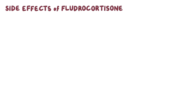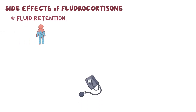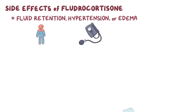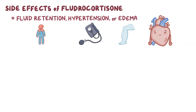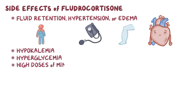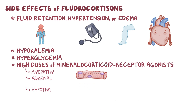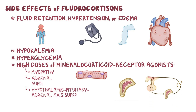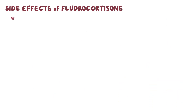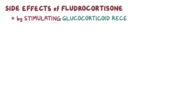Since fludrocortisone causes sodium and water reabsorption, individuals on fludrocortisone might develop fluid retention, hypertension, or edema — where fluid builds up in the body's tissues — exacerbating pre-existing heart failure. Other side effects include hypokalemia (increased potassium loss) and hyperglycemia. High doses of mineralocorticoid receptor agonists are associated with myopathy and adrenal hypothalamic-pituitary-adrenal axis suppression. By stimulating glucocorticoid receptors, these individuals can also develop iatrogenic Cushing syndrome.